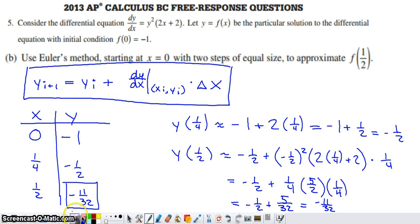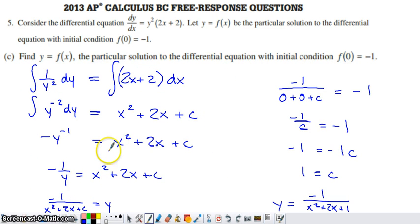And then in the last part of this, this is the part that was overlapping with AB topics. This is something that you could have done at the conclusion of calculus AB. Euler's method and L'Hopital's rule are exclusive to the BC course for the time being. In part C, they ask us to find the particular solution. If you separate your variables, you would just divide by y squared, multiply by dx. Your variables are separated.